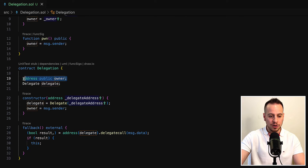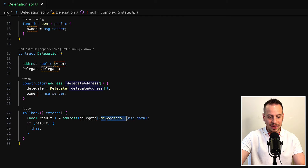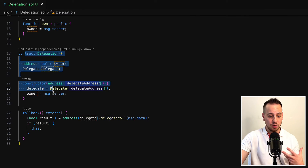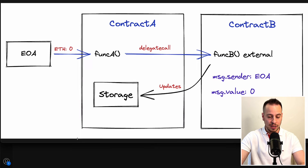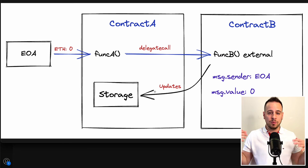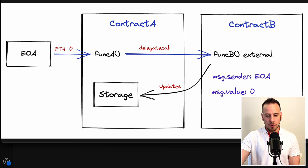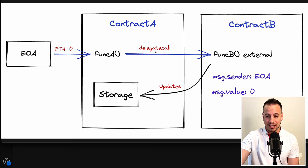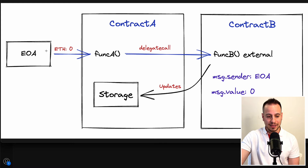It's going to change the owner in the Delegation contract, not in the Delegate contract, because this delegate call is going to be executed in the context and storage of contract A, which is the Delegation contract. This is what's special about delegate call, and it's very useful when we deal with proxies. Not only is the storage updated in contract A, but the message context is also preserved the same, because we didn't do a normal call but a delegate call.